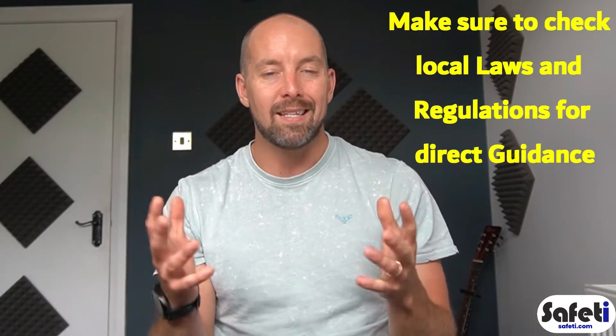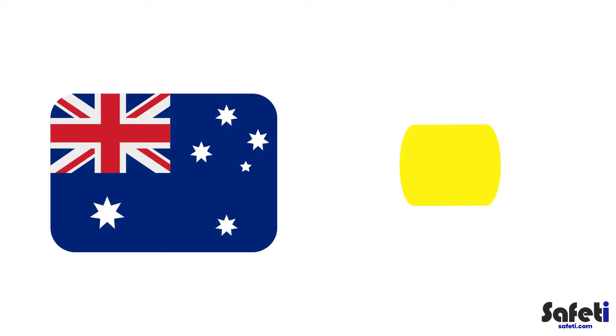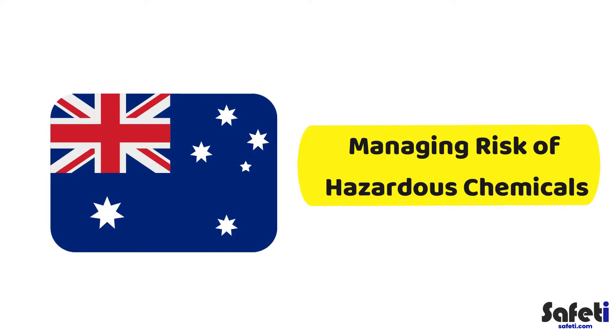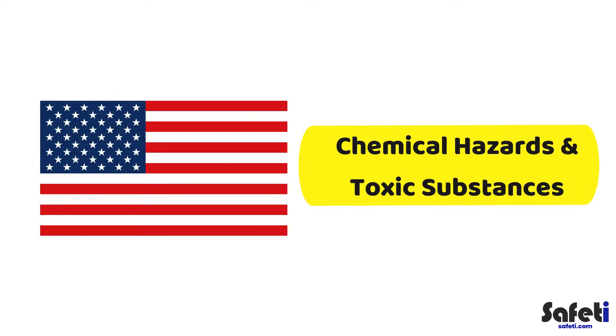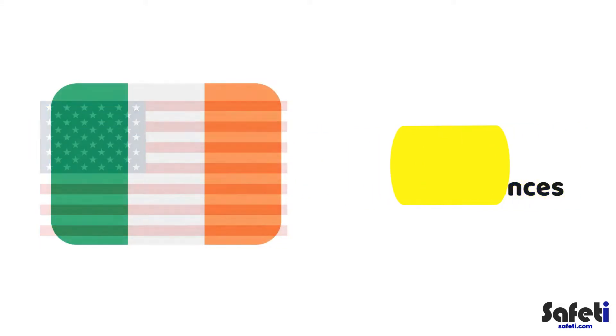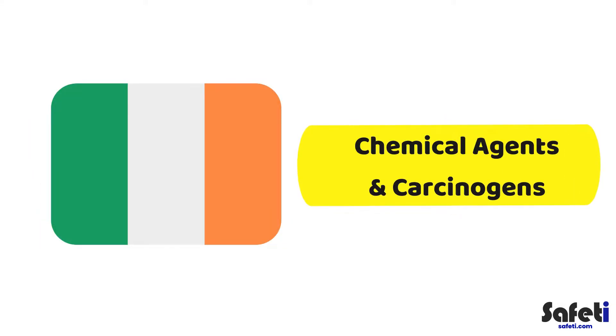Most other countries with good health and safety regulation have some form of hazardous substance legislation in place — it may just be called something slightly different. For example, in Australia they call it 'Managing Risk of Hazardous Chemicals,' in the USA they refer to 'Chemical Hazards and Toxic Substances,' and in Ireland they talk about 'Chemical Agents and Carcinogens.' But roughly, it's all talking about the same type of thing.